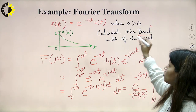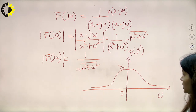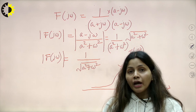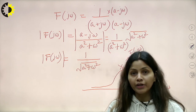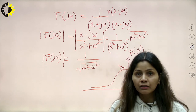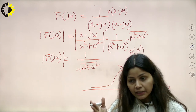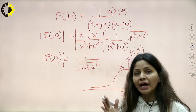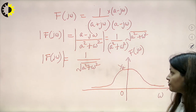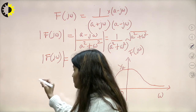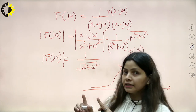I need to calculate the bandwidth of the signal. We define bandwidth as the frequency at which the magnitude of the signal becomes 1/√2 times the maximum amplitude. The maximum amplitude is 1/a at omega = 0, so we need to find the frequency omega₁ at which |F(jω₁)| = (1/√2) · (1/a).